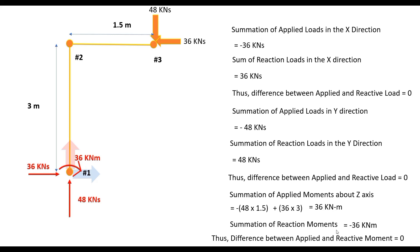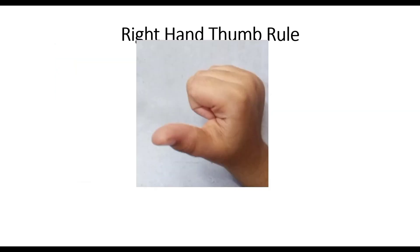In case there is any confusion about why clockwise moments are negative and anticlockwise moments are positive: applying the right-hand thumb rule — if the thumb points along the z axis coming out of the page, the curl of the fingers gives the positive direction of rotation. Since the z axis points out of the page, anticlockwise rotation is positive and clockwise rotation is negative.